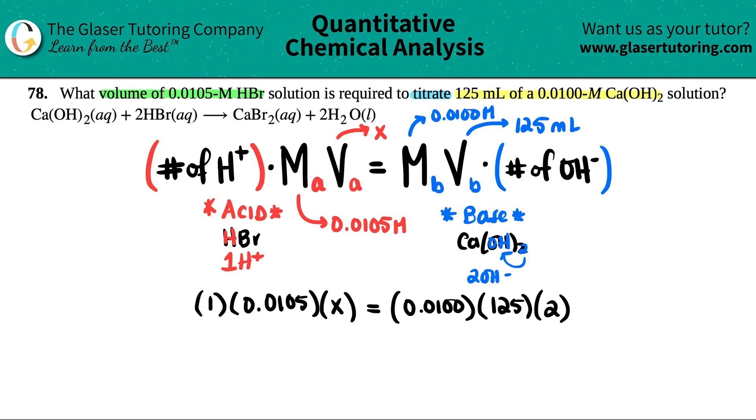So let's just solve it out. This whole side would just be 0.0105X equals, let's just multiply the other side, 0.01 times 125 times 2. I get 2.5. And then solve for X. So divide by 0.0105, 0.0105. And there we go. X equals 2.5 divided by 0.0105.